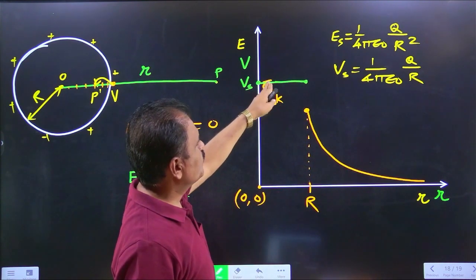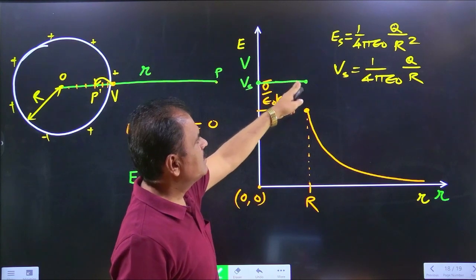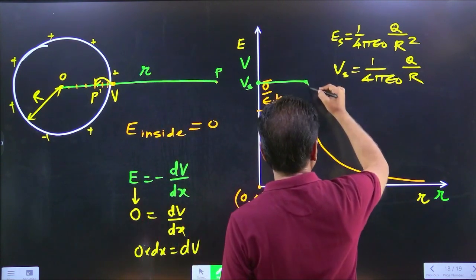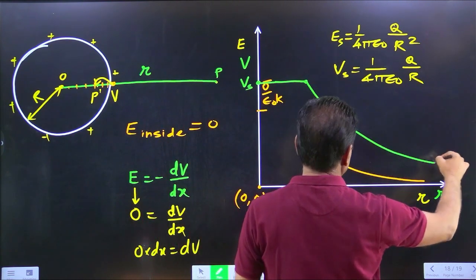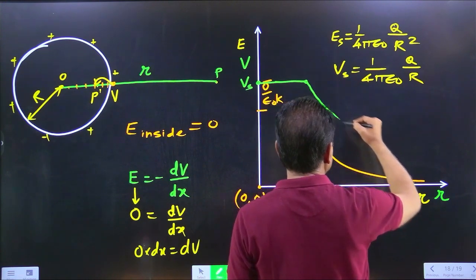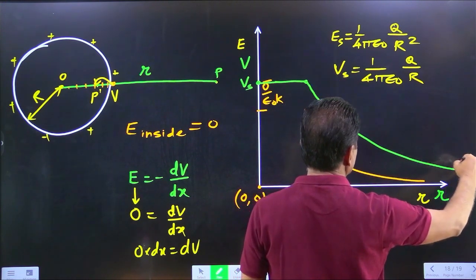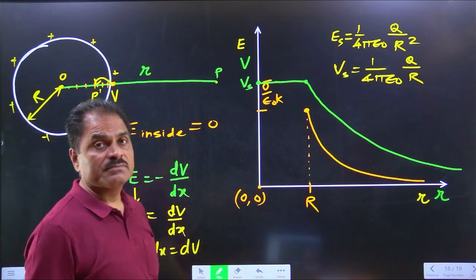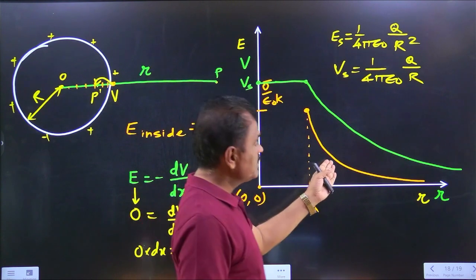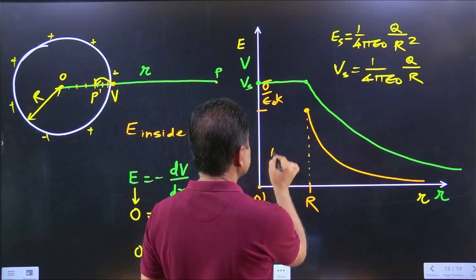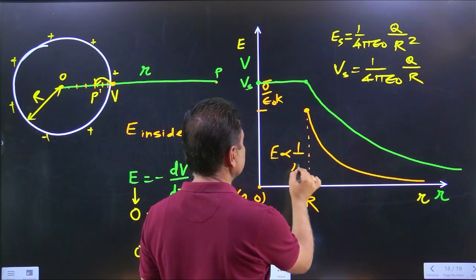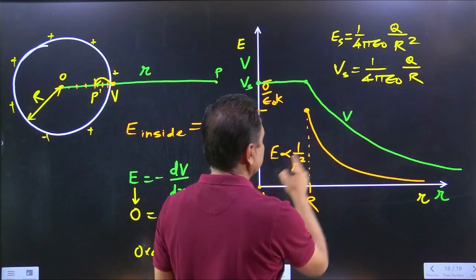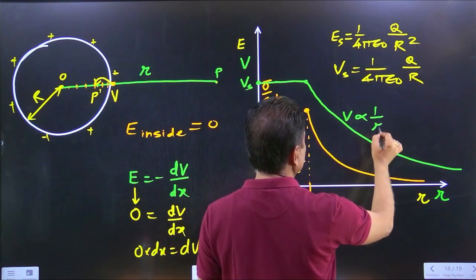Potential at the center is equal to potential anywhere inside, and this is the same up to the potential on the surface. After that, potential decreases. Intensity is inversely proportional to r squared, while potential is inversely proportional to r.